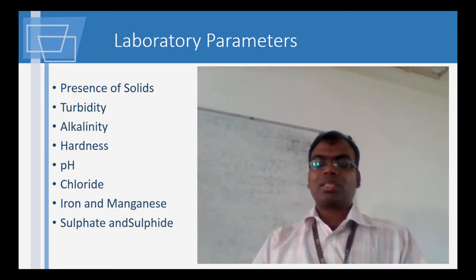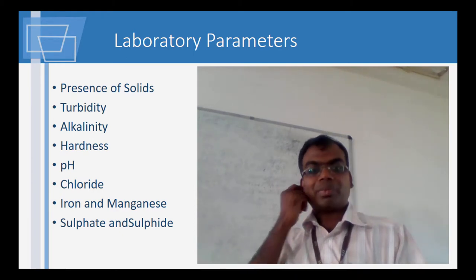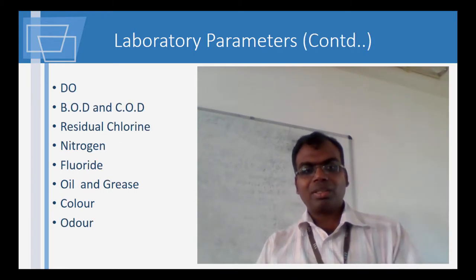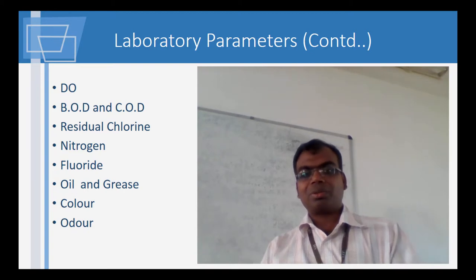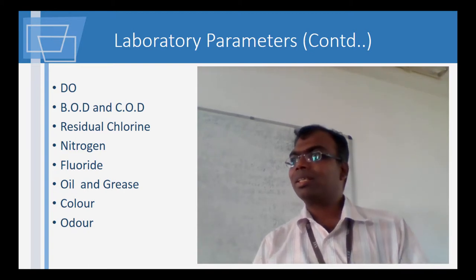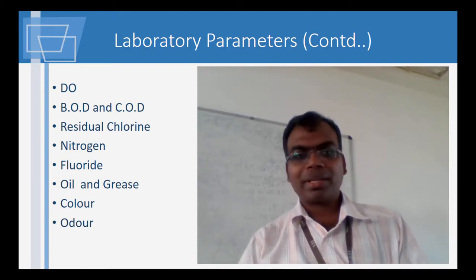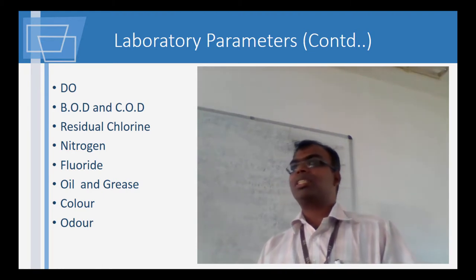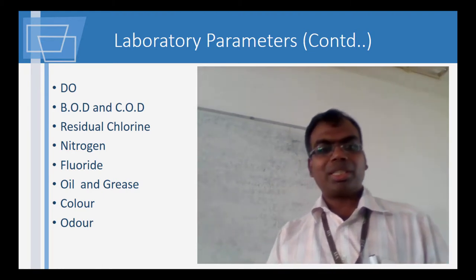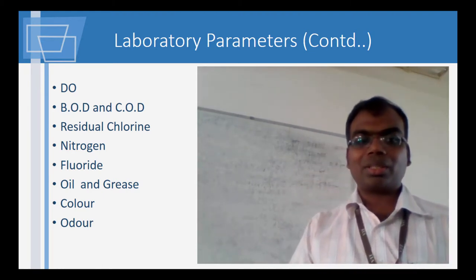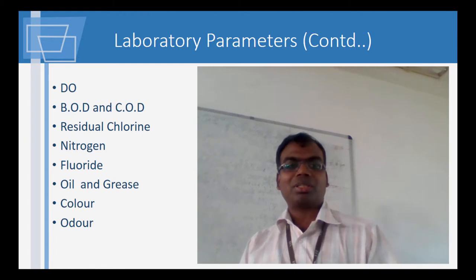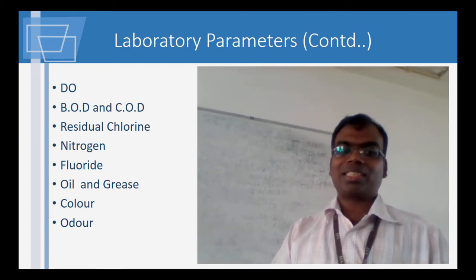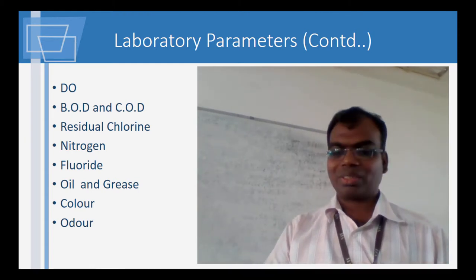What is the relationship? Some of the other terms are here. DO is nothing but dissolved oxygen. BOD is biochemical oxygen demand and COD is chemical oxygen demand. The rest of the stuff is quite common.